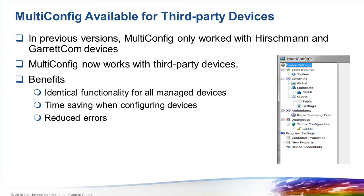Multi-config can now be used on third-party devices to configure standardized parameters — for example, MIB2 parameters or spanning tree. In the next version of Industrial HiVision, we will implement stage 2. This will enable multi-config to be used together with private MIBs, meaning it can configure parameters which are proprietary to a specific manufacturer.